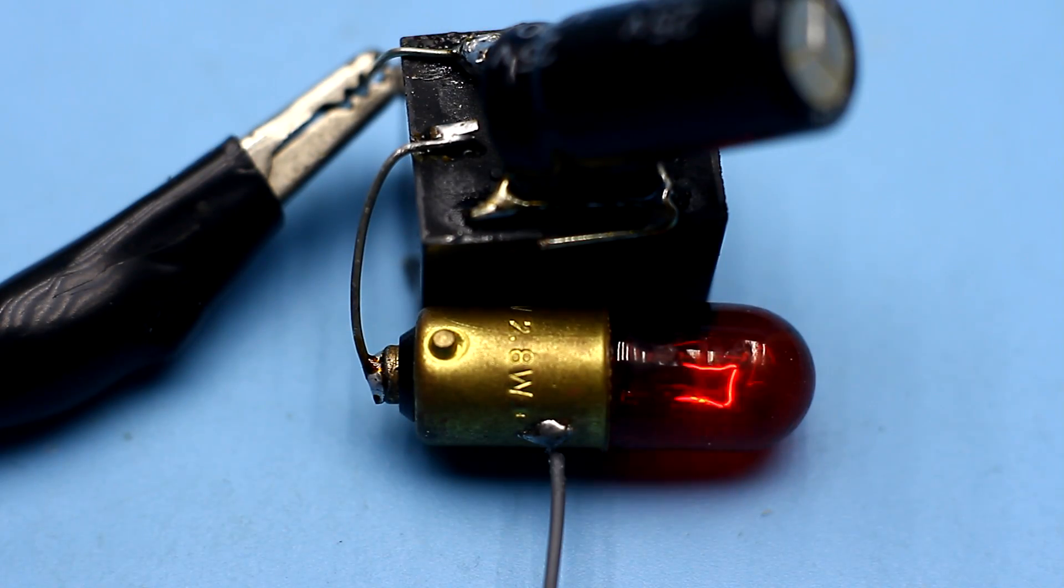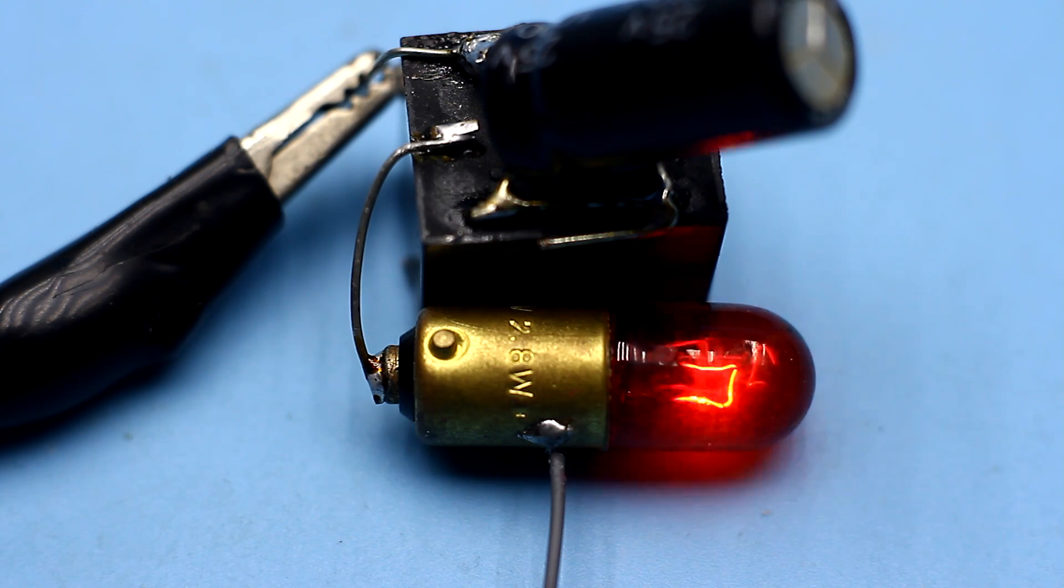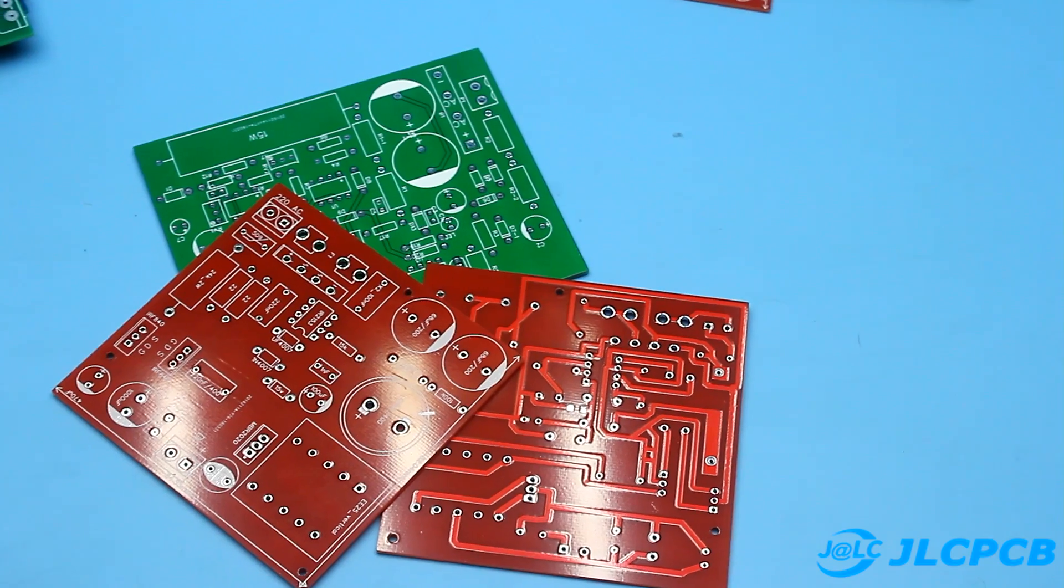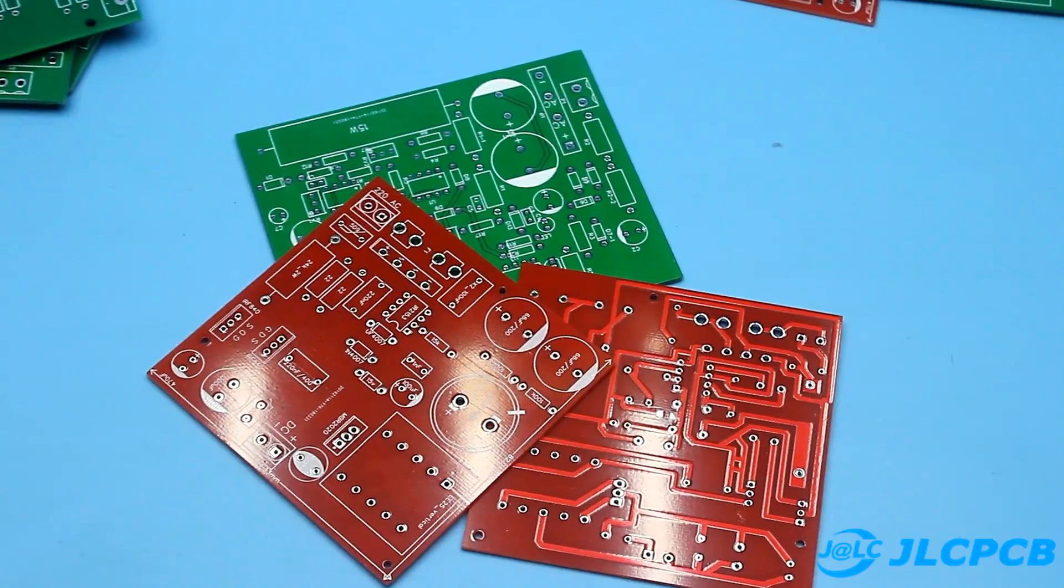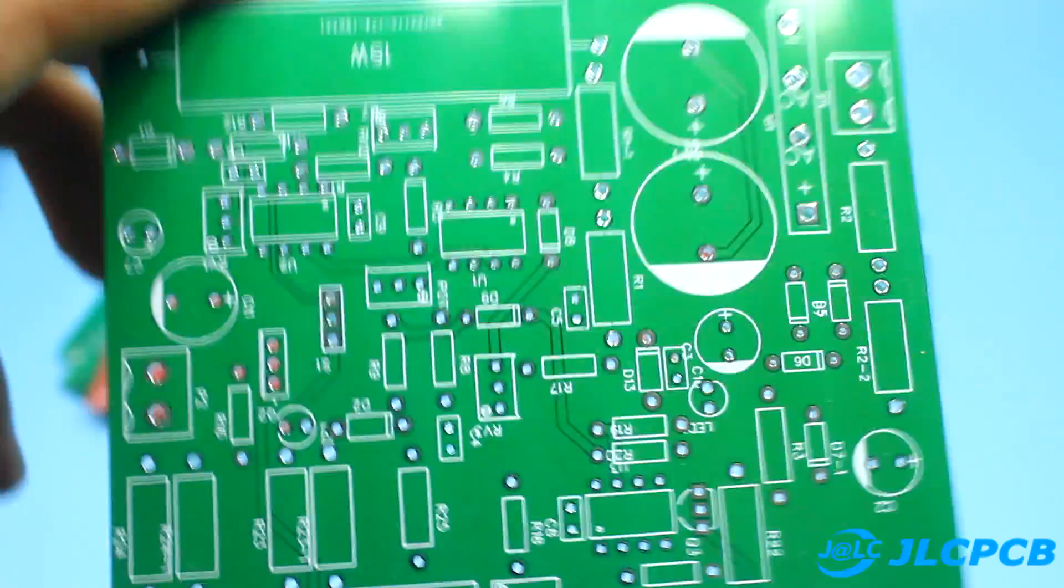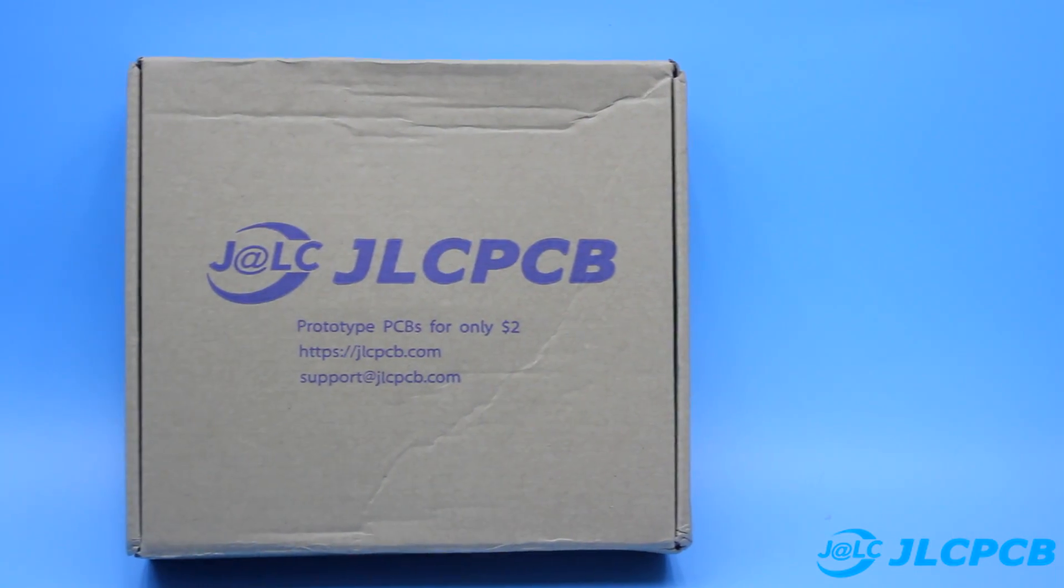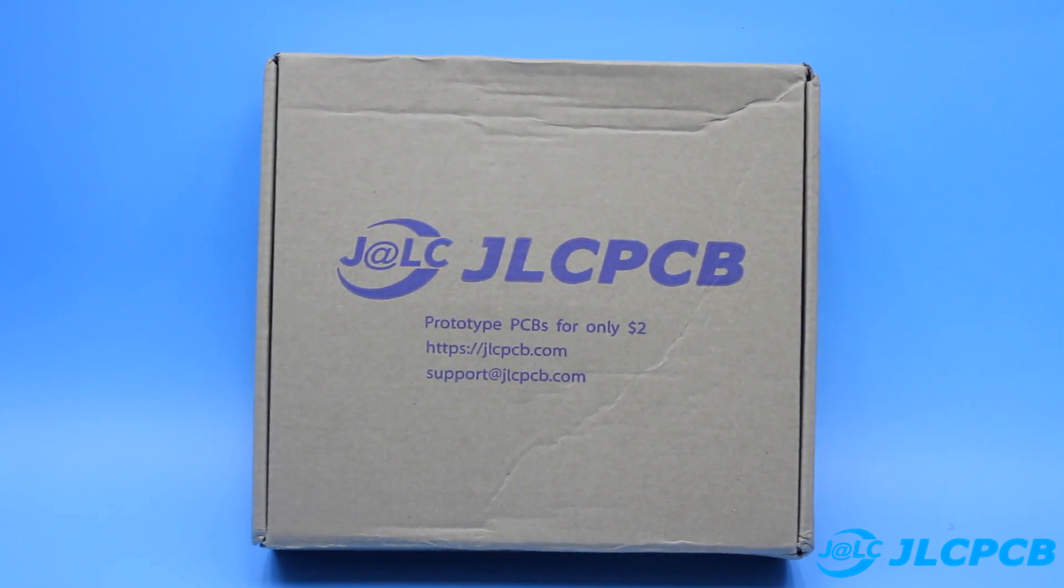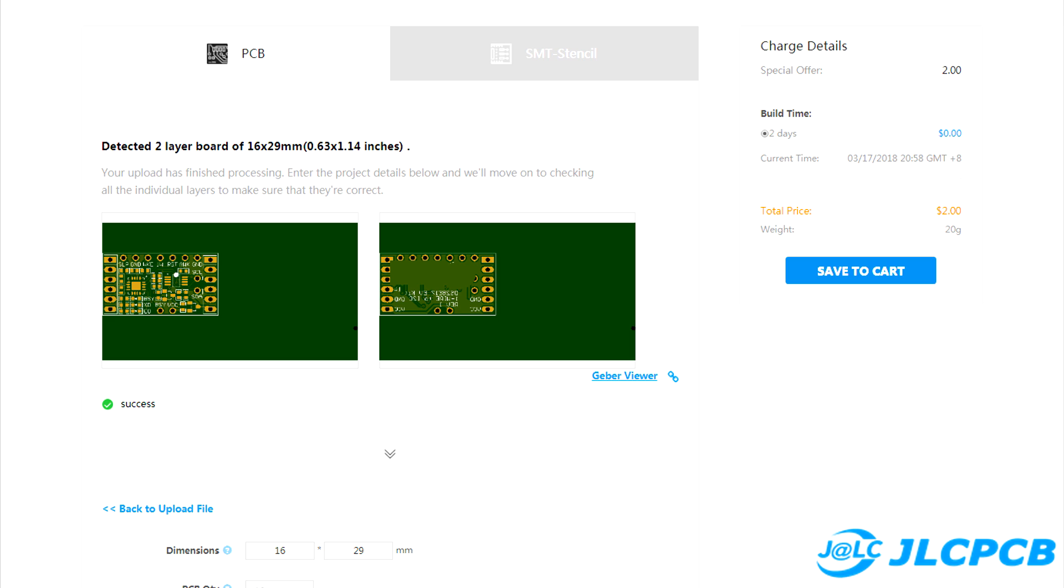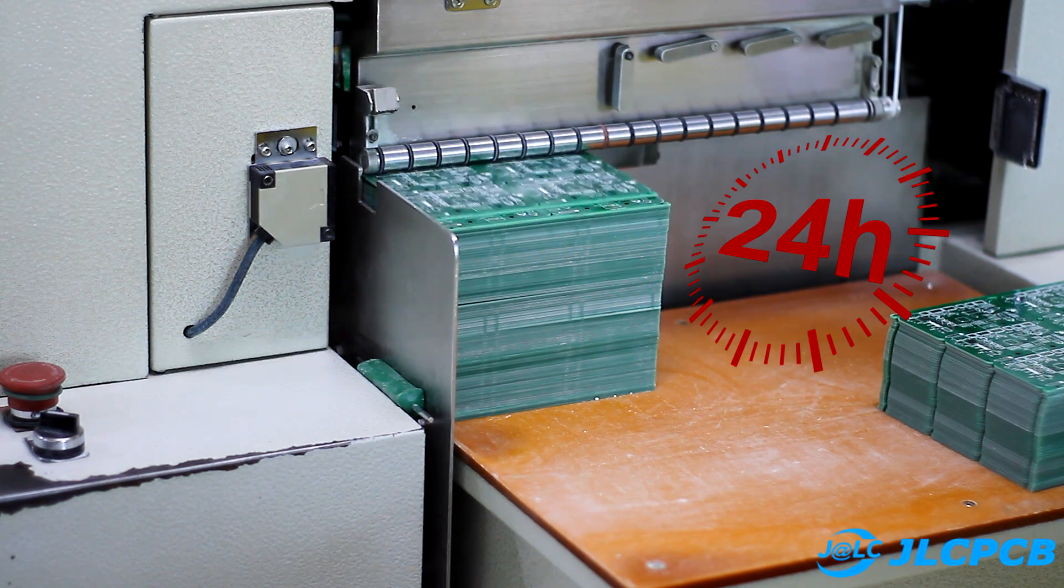This circuit, like all subsequent ones, is so simple that there is no point to make a printed circuit board. But if you are fond of electronics and want your homemade products to look like a factory product, I advise the JLCPCB company for the production of printed circuit boards. They will make boards of any complexity for you, and the cost of the boards is only 2 bucks for 10 pieces. Your order will be completed just a day from the date of receipt.